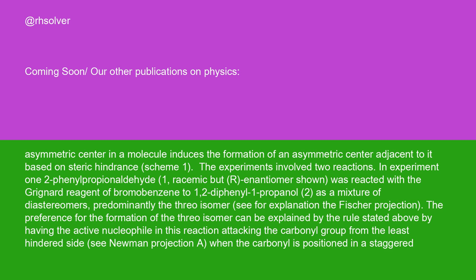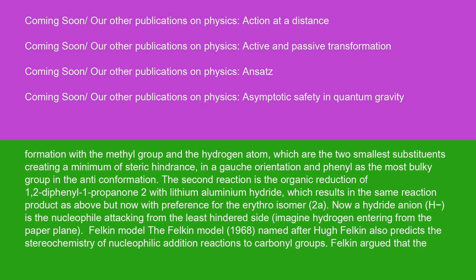See for explanation the Fischer projection. The preference for the formation of the threo isomer can be explained by the rules stated above, by having the active nucleophile in this reaction attacking the carbonyl group from the least hindered side (see Newman projection A), when the carbonyl is positioned in a staggered formation with the methyl group and the hydrogen atom, which are the two smallest substituents creating a minimum of steric hindrance, in a gauche orientation, and phenyl as the most bulky group in the anti conformation.